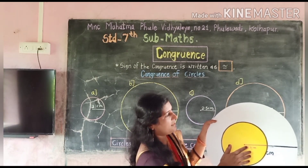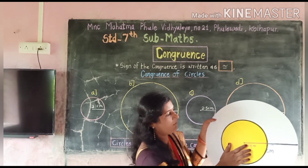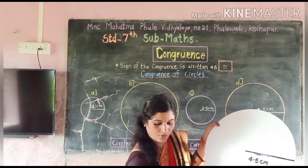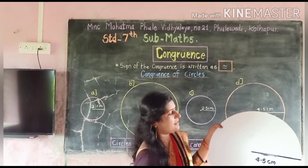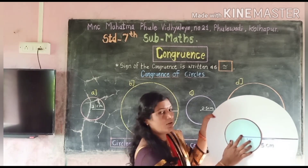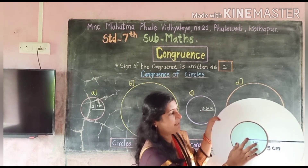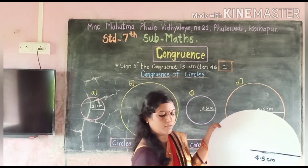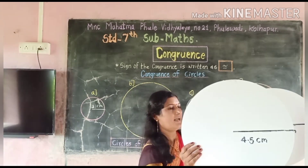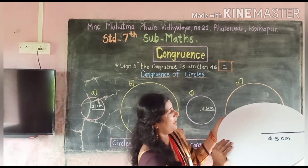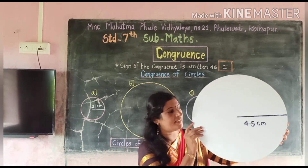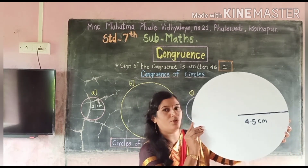Now take any two circular cutouts and place one upon the other. These do not exactly coincide with each other. Then take another pair of cutouts and place one on the other — these are also not exactly coinciding. Now take these two cutouts and place one upon the other. These are exactly coinciding with each other.